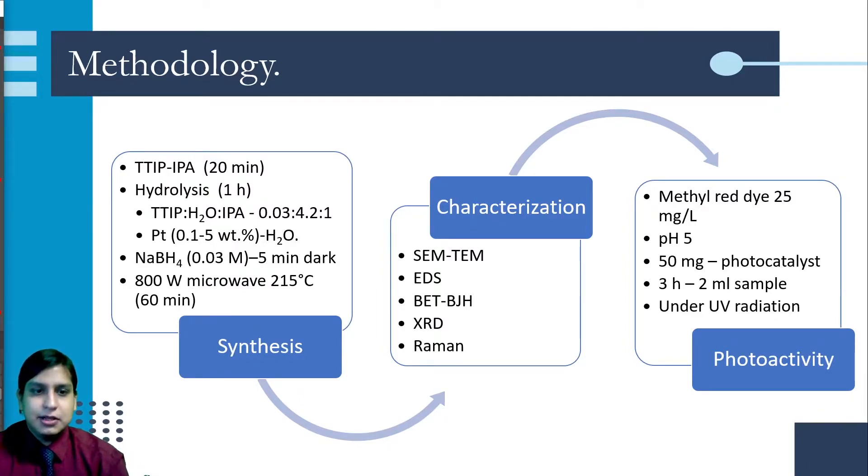The photocatalytic activity of 50 milligrams of the prepared catalyst was evaluated in the photodegradation of a 25 milligram per liter methyl red dye solution and a hydrogen potential of 5 as a molar compound. At given irradiation time intervals, and after three hours of total reaction time, samples of 2 milliliters were taken out, and the color removal was evaluated by UV-Vis spectroscopy.